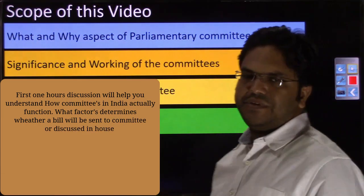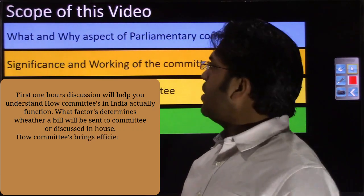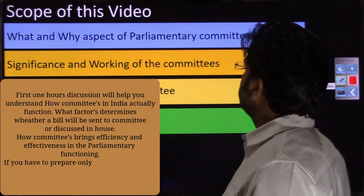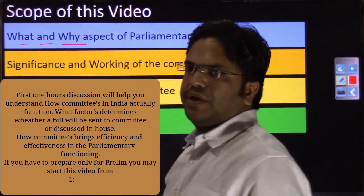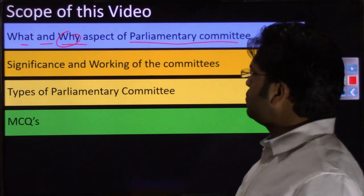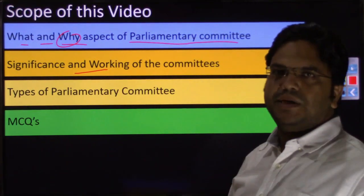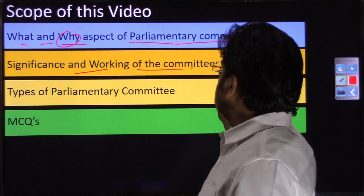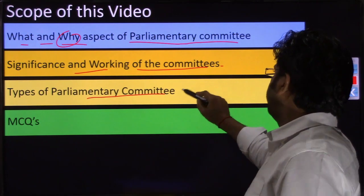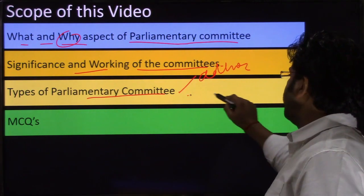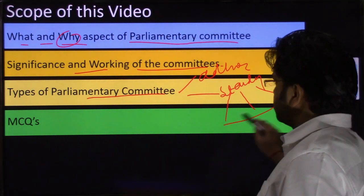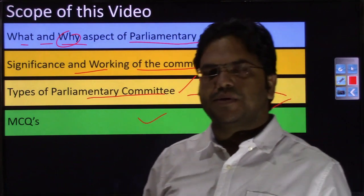The chapter is planned as follows: first we will discuss what is a committee and why, which is our tradition before discussing any topic. We will cover the significance of committees and why we have parliamentary committees in parliament, then the working of committees, then types — divided into ad hoc committees and standing committees — with further sub-categorizations. The last section will have 9 to 10 MCQs for you to attempt.